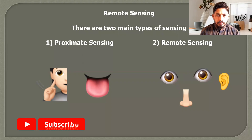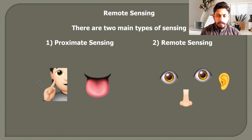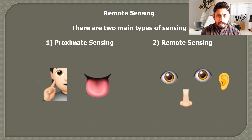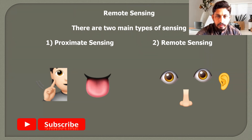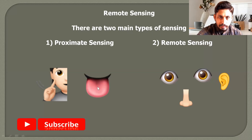Good morning. I'm here to introduce the basics of remote sensing — very fundamental things that we need to understand. Before starting, we have to define remote sensing and understand the difference between proximate sensing and remote sensing. Taking the example of a human being, we have five sensors. When we touch something and obtain information about an object, that is proximate sensing.